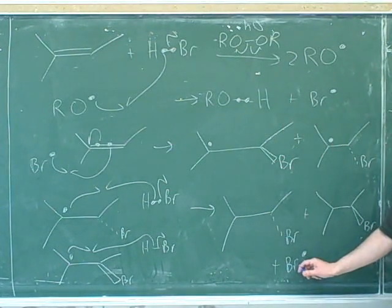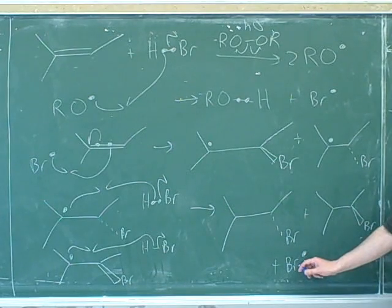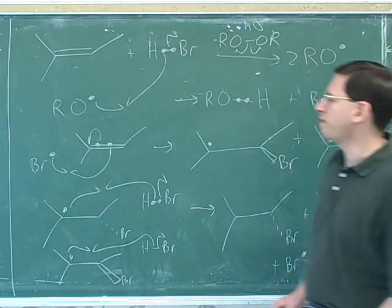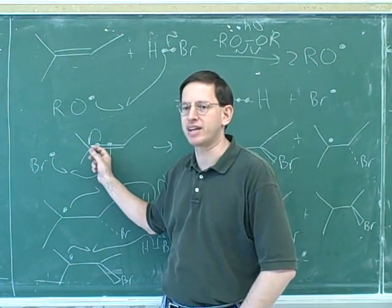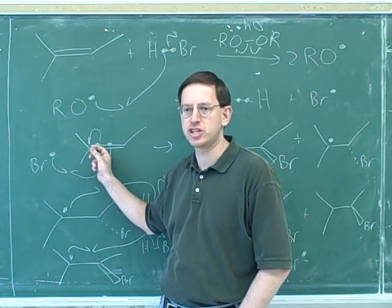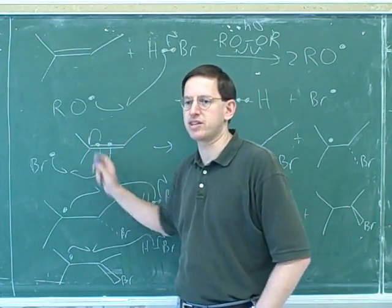We also get a bromine radical over here. And what would this bromine radical go on to do? Well, it would go back up to this previous propagation step. This is another chain mechanism. Remember that radical mechanisms tend to be chain mechanisms. So this propagates on itself.